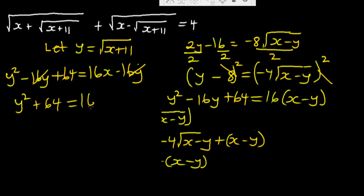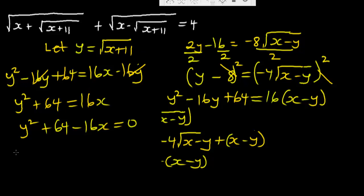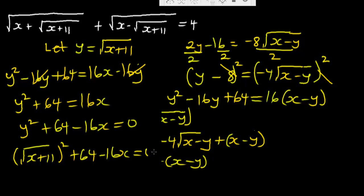Rearranging gives Y squared plus 64 minus 16X equals zero. Now we recall that Y equals the square root of X plus 11, so substituting back we get the square root of X plus 11, all squared, plus 64 minus 16X equals zero. The square cancels the square root, leaving X plus 11 plus 64 minus 16X equals zero.